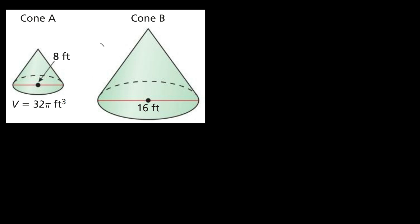So as you can see we have two cones right here, cone A and cone B. The little cone, cone A, we're given the length of the diameter which is 8 feet and we're also given the volume which is 32 pi feet cubed.